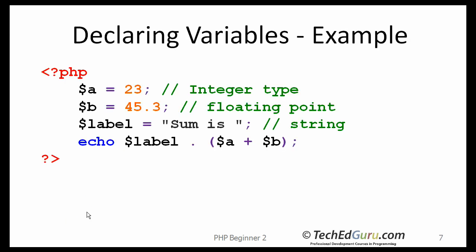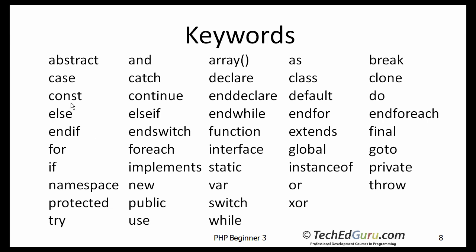Declaring variables. This is how you go about declaring variables. In this case, you are assigning a value 23 to variable a. Then you are assigning a value 45.3 to b. And then sum is a string type assigned to a label. Then you will try printing all of that information using the echo statement that you saw earlier. Here is a list of keywords in PHP — keep that list handy, because if you ever try using a keyword for a variable name, you will get an error in your PHP script.